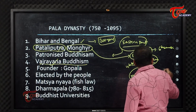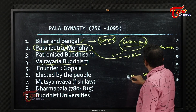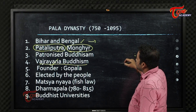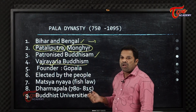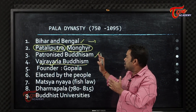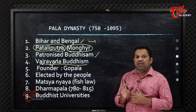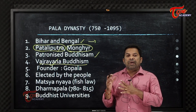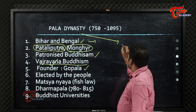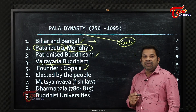One important point: the Pala rulers were the last rulers to patronize Buddhism. Coming to the point — who was the founder of the Pala dynasty? Gopala. Gopala was the founder of the Pala dynasty.